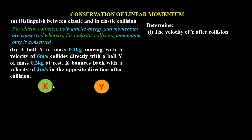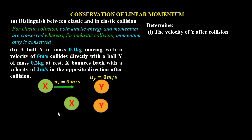Let's consider the following: we have ball X and ball Y before collision. X moves towards Y at a velocity of 6 meters per second, so Ux is the initial velocity — the velocity of X before impact. The velocity of Y before collision, Uy, is 0 meters per second because we are told it was at rest.